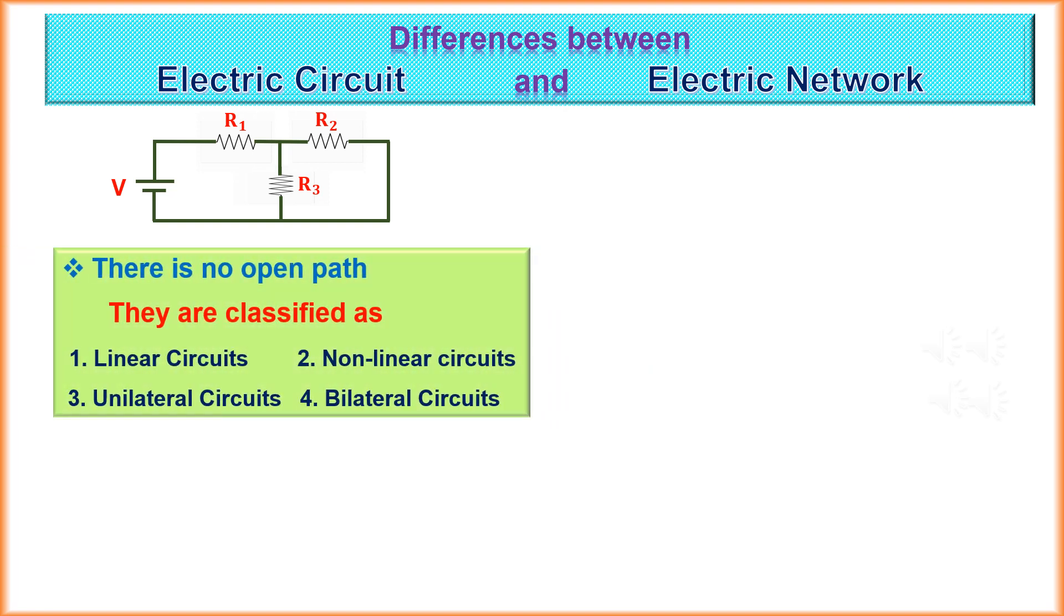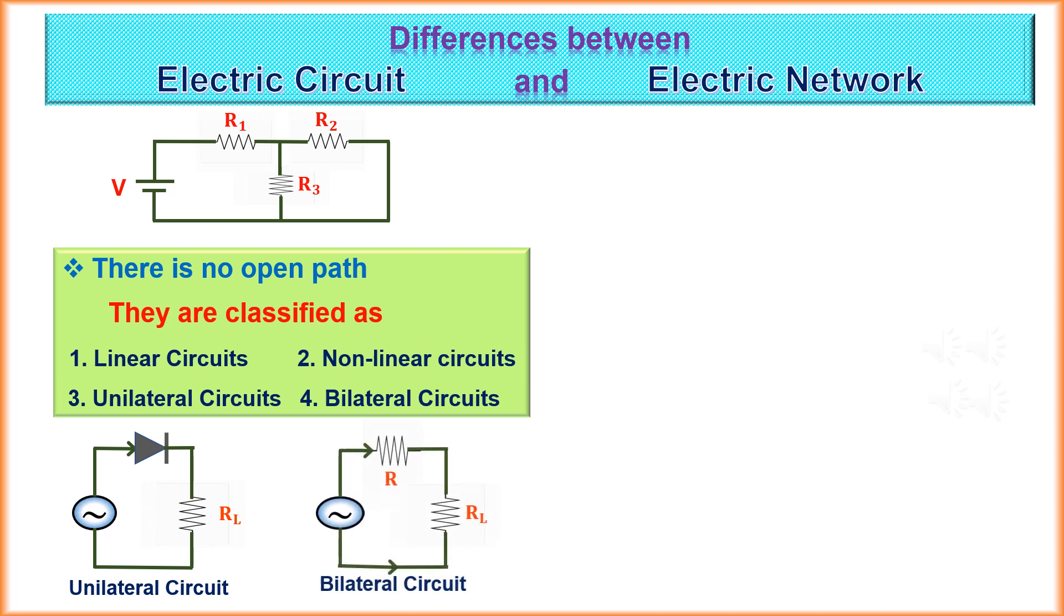They are classified as linear circuits, non-linear circuits, unilateral circuits and bilateral circuits. When the flow of current through an electric circuit changes uniformly with the changes of voltage. In unilateral circuits, the property of circuit changes with the change of direction of supply voltage or current. In bilateral circuits, the property of circuit does not change with the change of direction of supply voltage or current.